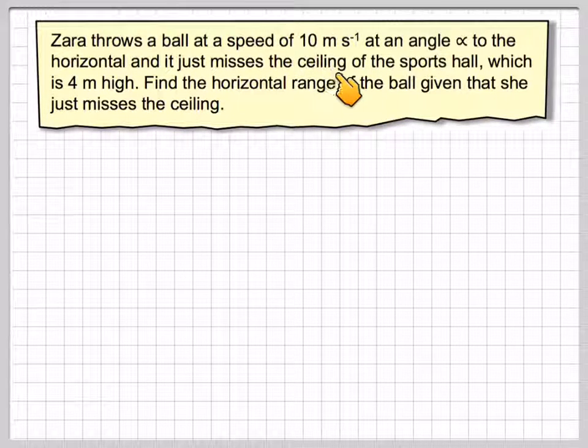Zara throws a ball at a speed of 10 metres per second at an angle alpha to the horizontal and it just misses the ceiling of the sports hall which is 4 metres high. Find the horizontal range of the ball given that she just misses the ceiling.